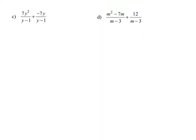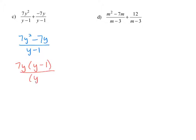In example C, we can add the two fractions together because they have the same denominator. We keep the denominator as y minus 1 and add the numerators: 7y squared plus a negative 7y is 7y squared minus 7. We want to simplify further by factoring out 7y in the numerator, which leaves y minus 1 in the numerator and another factor of y minus 1 in the denominator. We can simplify because we have a common factor, so our final result is 7y.